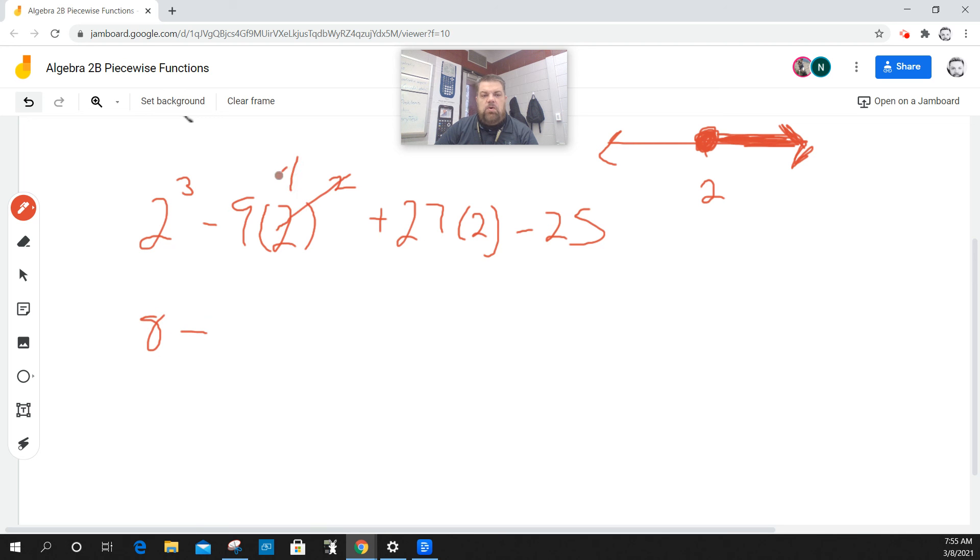Now remember, 2 squared is 4. I've got to follow the order of operations. Times a negative 9 is negative 36. 27 times 2 is 54 minus 25.